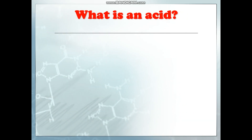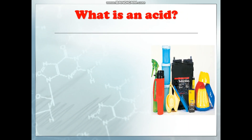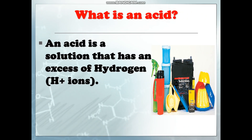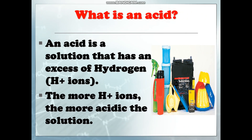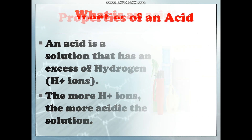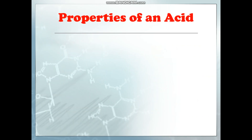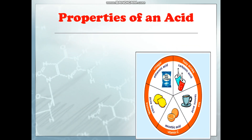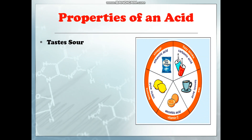What is an acid? An acid is a solution that has an excess of hydrogen ions. The more hydrogen ions, the more acidic the solution.